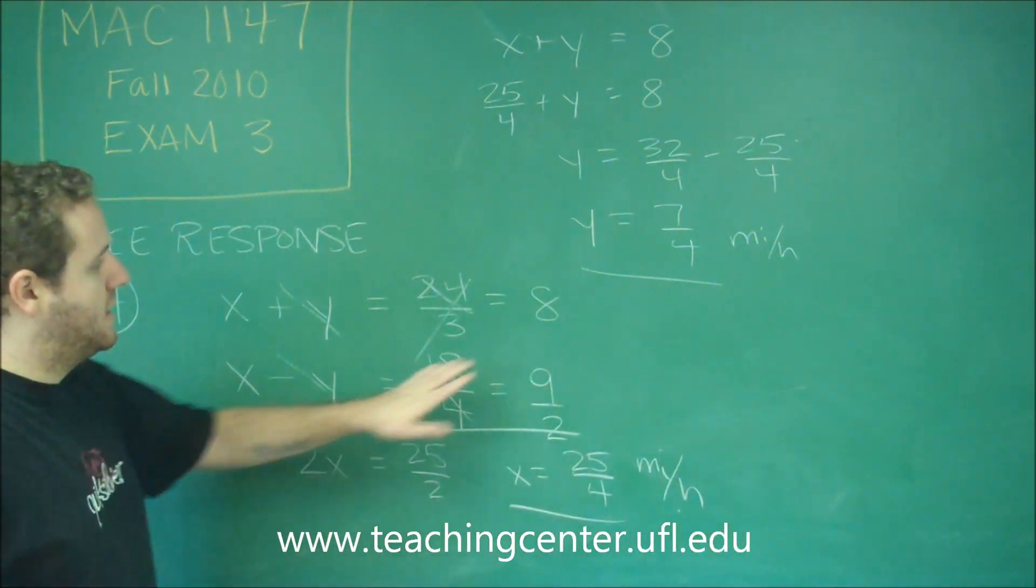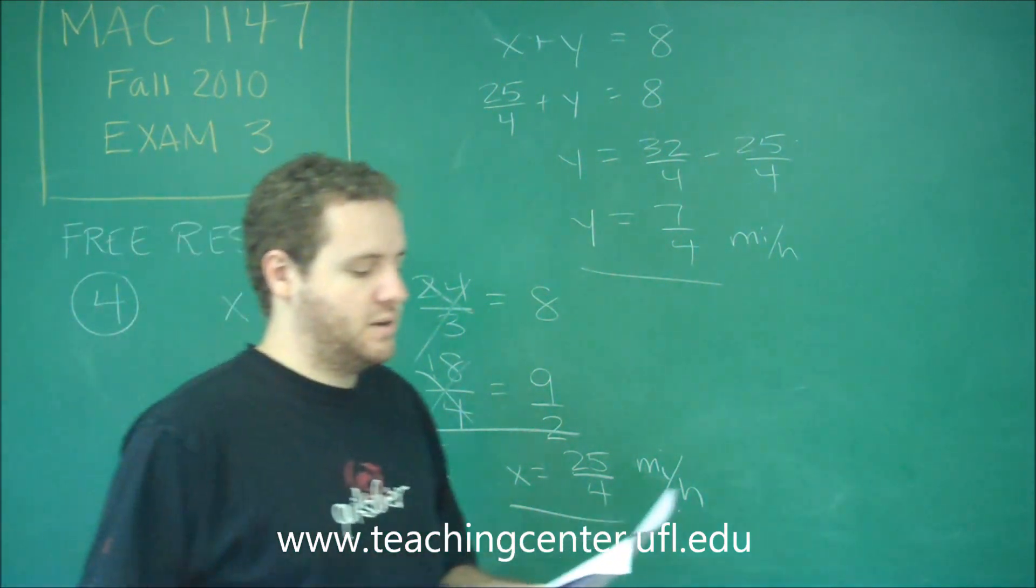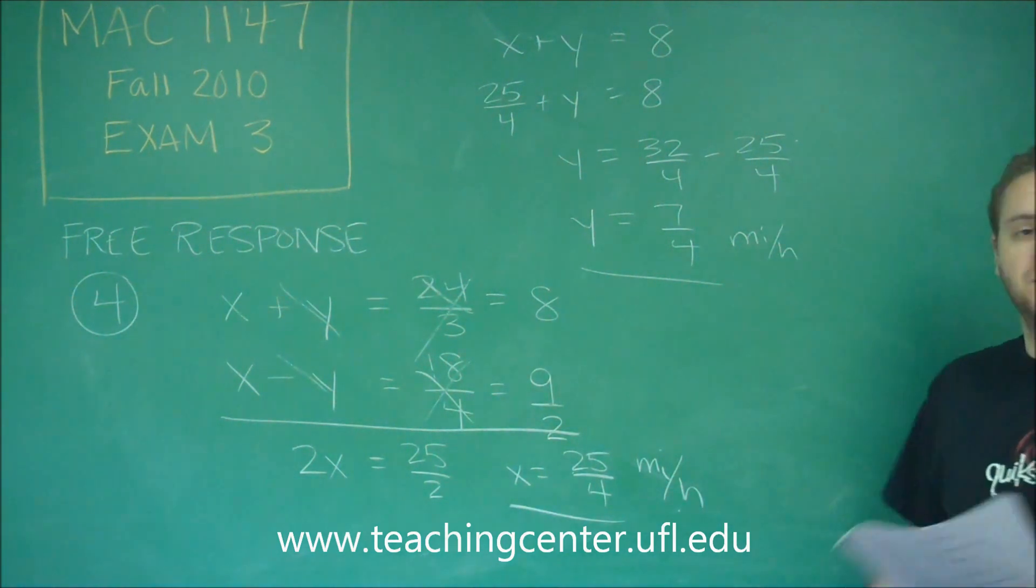And these are both in the unit of miles per hour because when we added them, we ended up getting the 8 miles per hour or when we subtracted them, we ended up getting the 9 over 2 miles per hour. So those must have been in the unit of miles per hour as well.